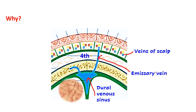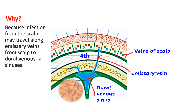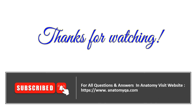If there is any infection in the scalp, it will be carried via the emissary vein to the dural venous sinus, which can then lead to meningitis and can also affect the brain tissue. That is why the fourth layer — the loose areolar tissue — is known as the dangerous layer of the scalp. Thanks for watching. If you have not subscribed, please subscribe to the channel, and for questions and answers in anatomy, visit anatomyqa.com.